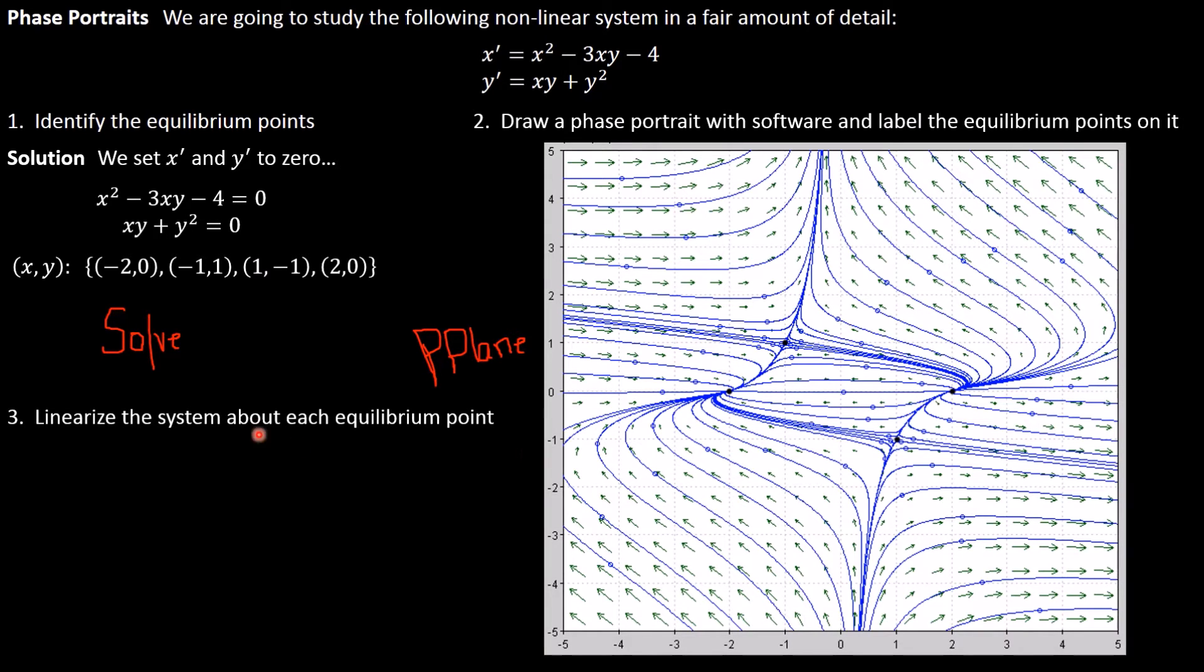And finally, we're going to linearize our system of equations about each equilibrium point. So as you can see, there are four equilibrium points as listed here: negative 2, 0, negative 1, 1, 1 negative 1, and 2, 0. So the origin's here, of course, but I haven't drawn the axes. Those are the four equilibrium points. We're going to do what's called linearization now. Now, how does that work exactly?